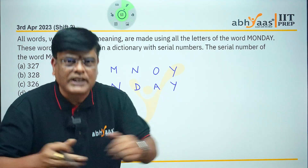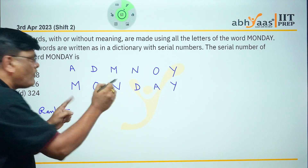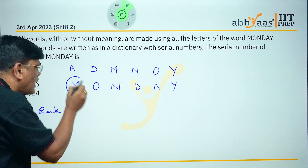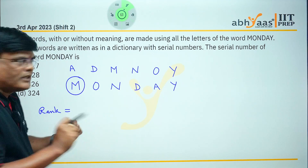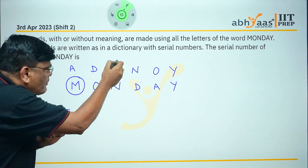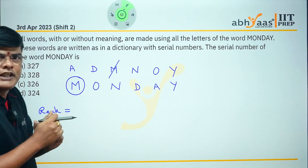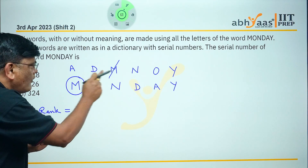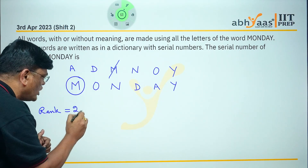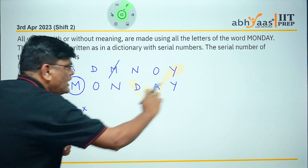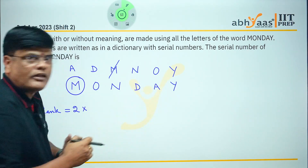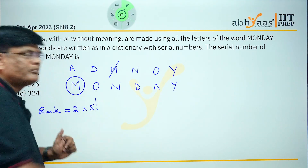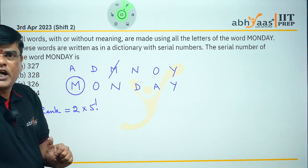Now I will explain the meaning of this. In the word, first I am circling the letter M. In the alphabetical order, cancel the letter M. Before M, there are two letters, so write 2 × (remaining letters factorial). The remaining letters are five, so we get 2 × 5!.